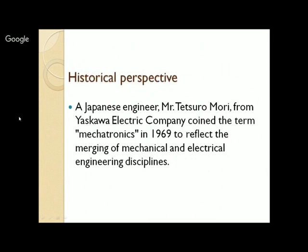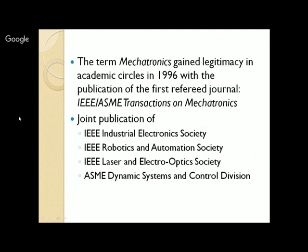The term mechatronics was coined by Japanese engineer Tetsuro Mori from Yasukawa Electric Company in 1969 to reflect the merging of mechanical and electrical engineering disciplines. Yasukawa Electric Company is still a very famous company for electric motors and robots. The term mechatronics gained legitimacy in academic circles in 1996 with the publication of the first refereed journal — the IEEE and ASME Transactions on Mechatronics — a joint publication of IEEE Industrial Electronics Society, Robotics and Automation Society, Laser and Electro-Optics Society, and ASME's Dynamic Systems and Control Division.